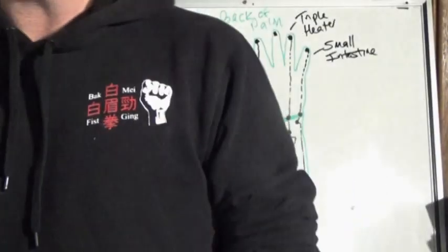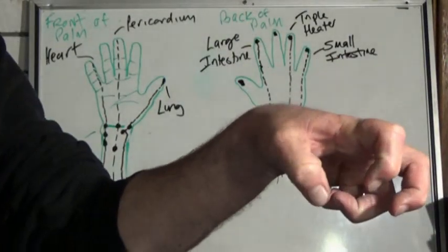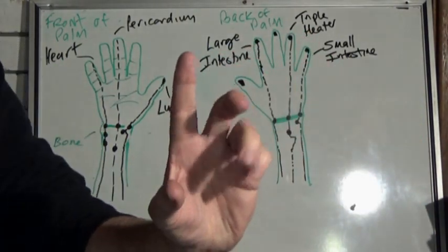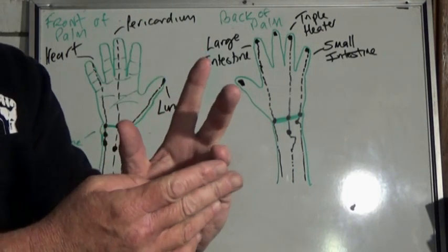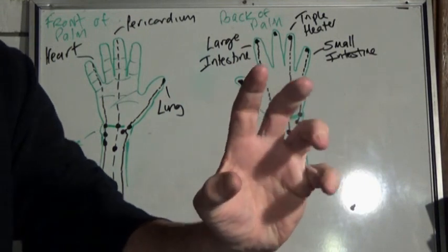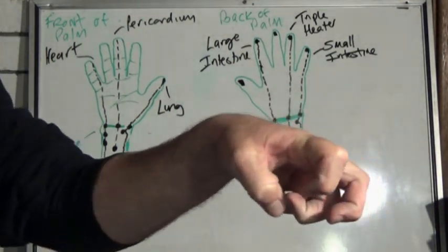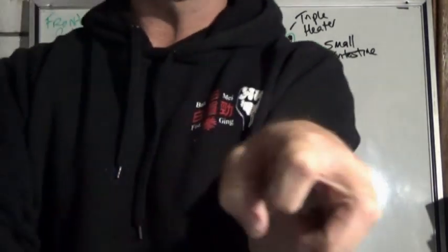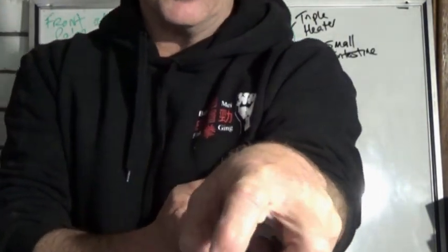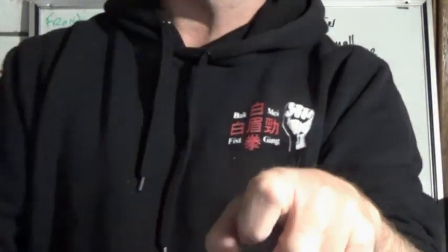Alright guys, now this is the proper way in Bak Mei to do a yin jiao, an eagle claw. These little first two bottom fingers are going to start the coil, and this knuckle is facing the opponent. It's not out there like this—in our system it's down because we're using this as a dim mak application hidden.